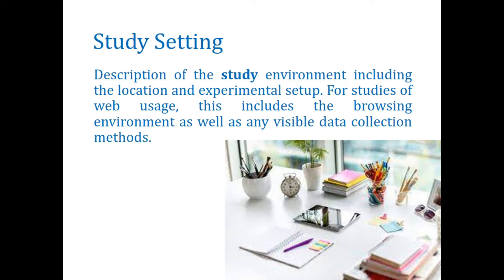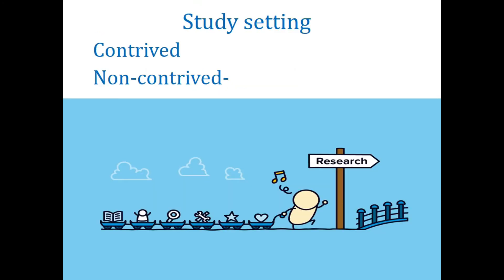Study setting basically describes the environment and place where the researcher conducts data collection for research. When researchers set up their study area and conduct research, the environment can be visible or non-visible. We differentiate the types of study into two types: contrived and non-contrived.